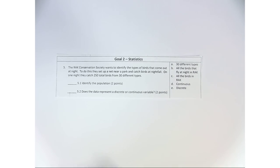It says the Rack Conservation Society wants to identify the types of birds that come out at night. To do this, they set up a net near a park and catch the birds at nightfall. On one night, they catch 250 total birds from 30 different types.